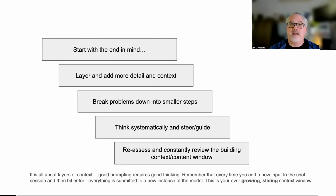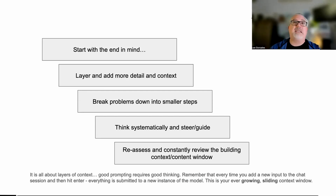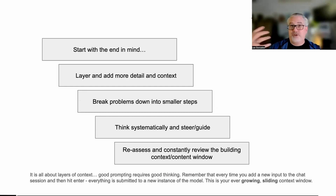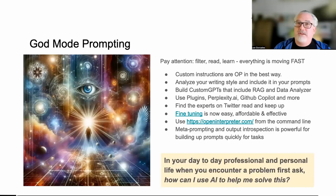Alright, at a high level to summarize on expert: always start with the end in mind, communicate to the model what you want to achieve, and then layer on more detail and context. Think thoughtfully about how you break your problems up into smaller sub-parts so that you can have this model solve this problem and that model solve that problem. Begin to delve into tools like LlamaIndex and LangChain to do some custom coding on your side. Think systematically as you go, and have this notion of constantly reassessing: is what I'm doing the best possible way to approach solving this problem?